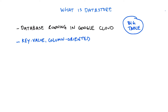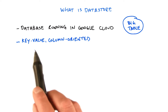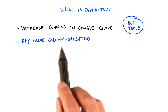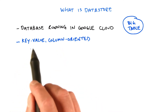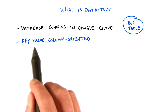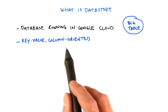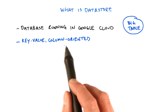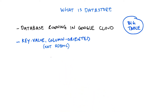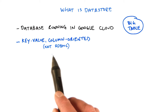Datastore is a NoSQL database, and to be more specific, it is a key-value, column-oriented store. It is key-value because the way you get and put information is very similar to that of hash tables or associative arrays in programming languages. And it's column-oriented, which means that columns, not rows, are stored together, which means better performance and scalability for certain operations. This also means that Datastore is not like a traditional relational database system using SQL.